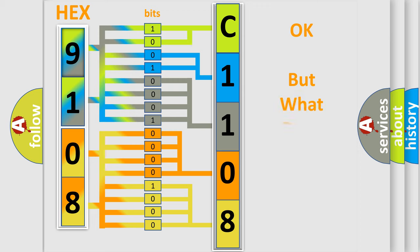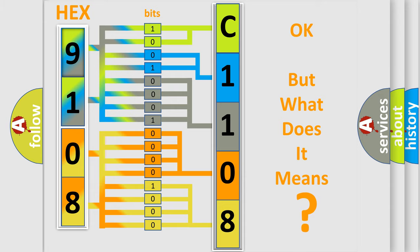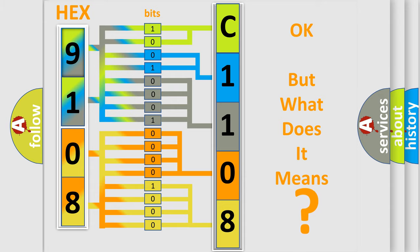We now know in what way the diagnostic tool translates the received information into a more comprehensible format. The number itself does not make sense to us if we cannot assign information about what it actually expresses. So, what does the diagnostic trouble code C1108 interpret specifically for Nissan car manufacturers?